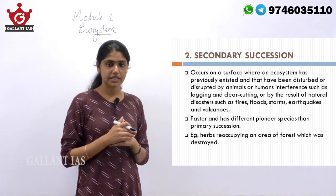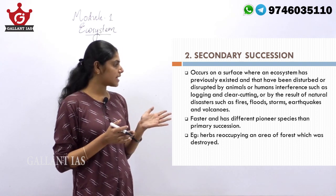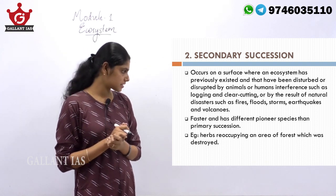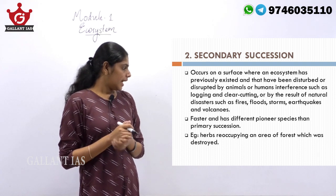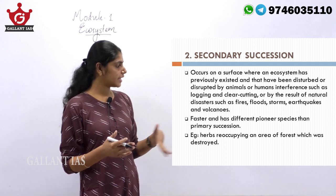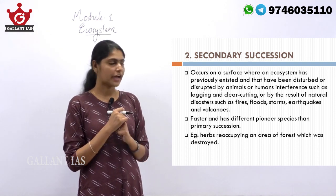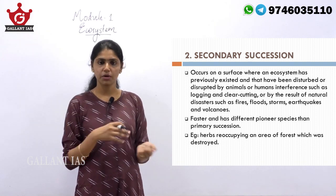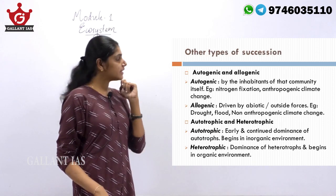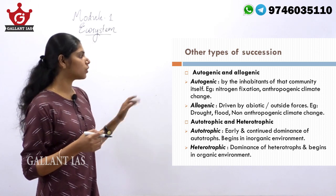Secondary succession, when compared with primary succession, is faster and has different pioneer species. An example is herbs reoccupying an area of forest that was destroyed by natural or man-made factors. There are also other types of succession, for example autogenic and allogenic succession.